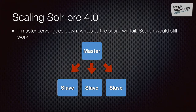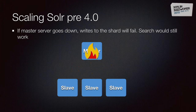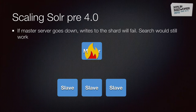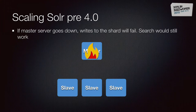This worked very well but has some issues. All the configuration for master-slave before SolrCloud was manual — you had to specify who was the master and who was the slave. There was also no high availability for writes, so if the master went down, updates would fail. Queries would still succeed, but you would have to manually fix the master or add another node to become master.